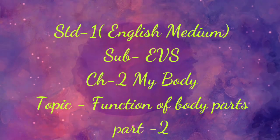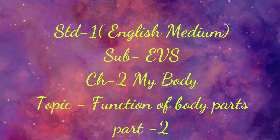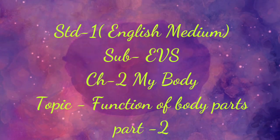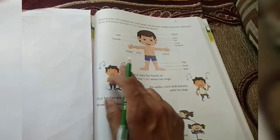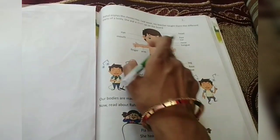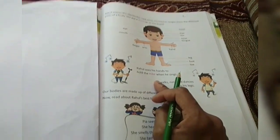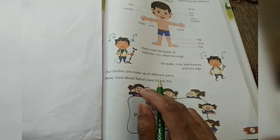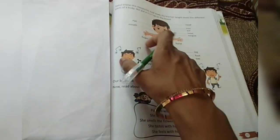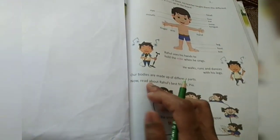Welcome to Standard First English Medium Subject EBS Chapter 2 My Body, Topic: Function of Body Parts, Part 2. Hello students, in the first part we learned about different parts of the body. Now in the second part we are going to learn the functions of our body parts.